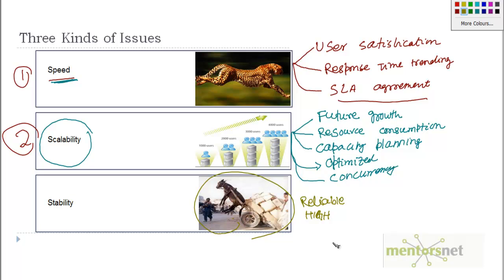We also need to ensure the system is resilient enough to recover from a fault. Additionally, slow leaks are a stability issue — they can't be classified as scalability issues, but in the long run a slow leak becomes a significant drain on the system.